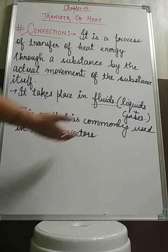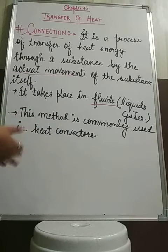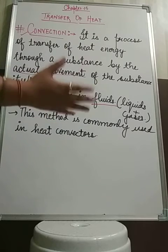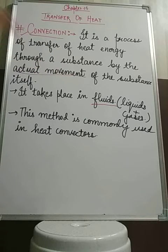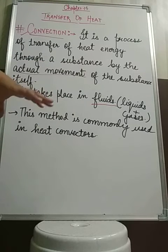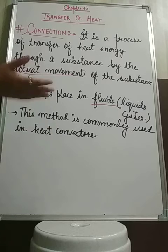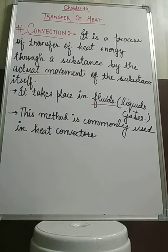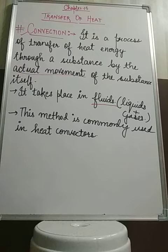Convection is commonly used in heat convectors because this makes the surrounding air hotter. As the air becomes hotter, it moves in different directions, and the cooler air comes to take its place. That cooler air again becomes hot, becomes lighter, rises up, and moves in different directions. This whole process continues until all the air in the room attains the same temperature, and that's how it helps in maintaining the room temperature.